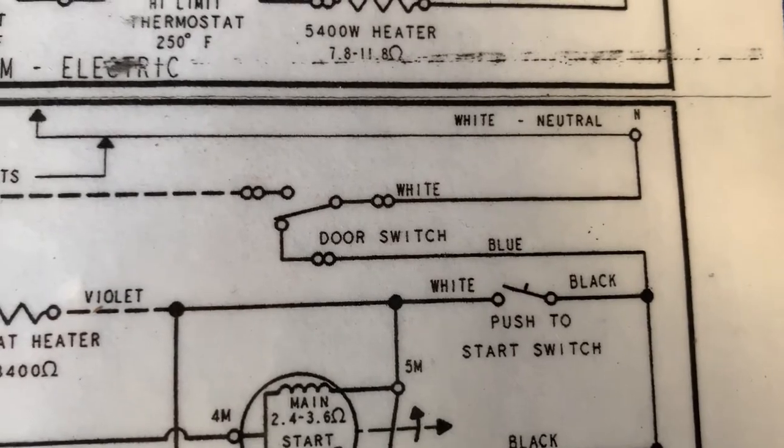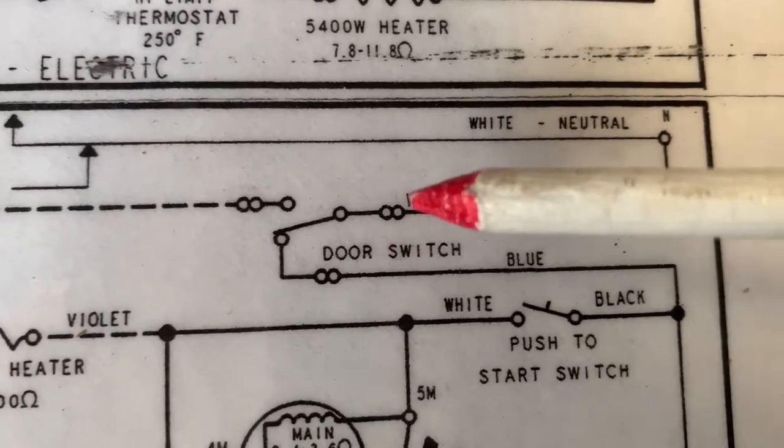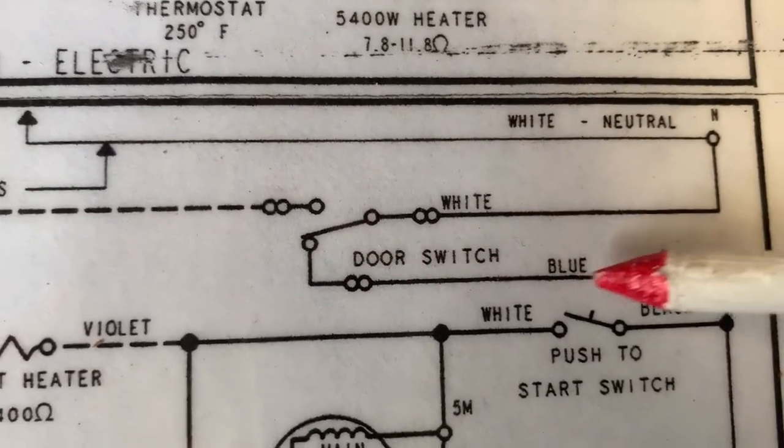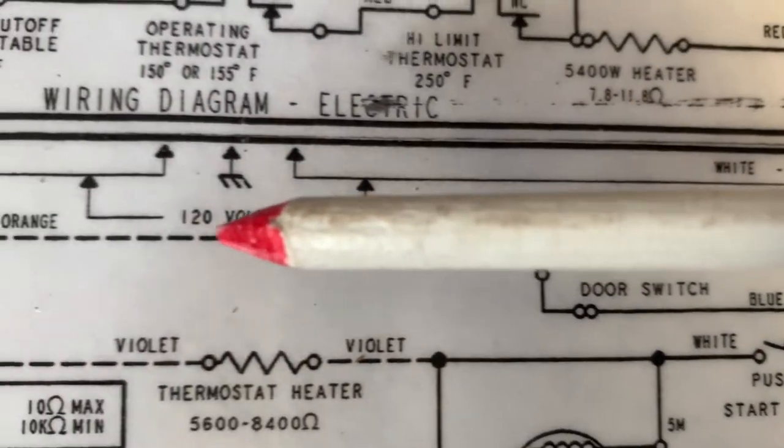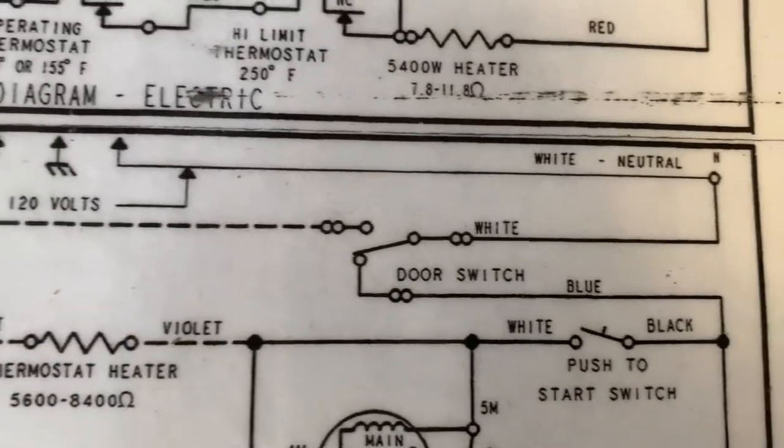The path is from neutral into the common of the switch and it's either going to power the dryer to give neutral to the dryer, or it's going to give neutral to the drum lamp. It's an either-or switch.